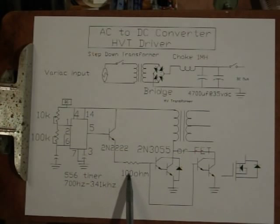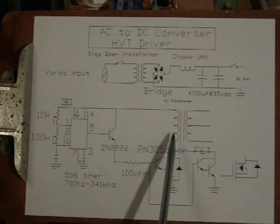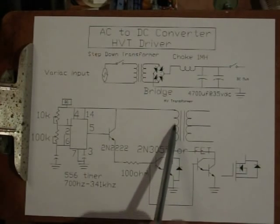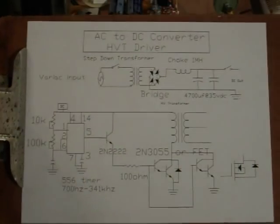2N2222 transistor, 100 ohm resistor. I'm using right now a single 2N3055 to drive the six turn primary on the high voltage transformer. And that's it for that particular device. That's the end of the schematic.